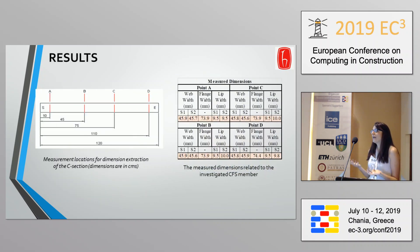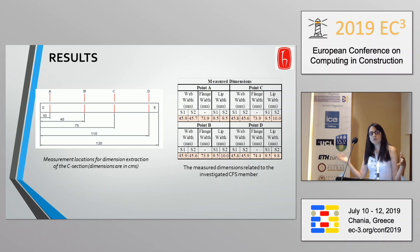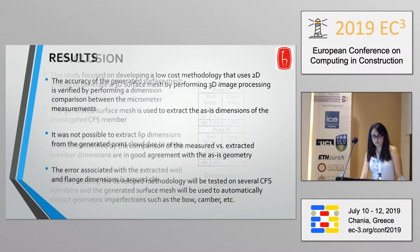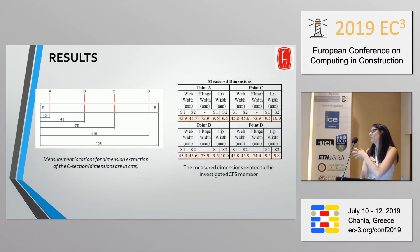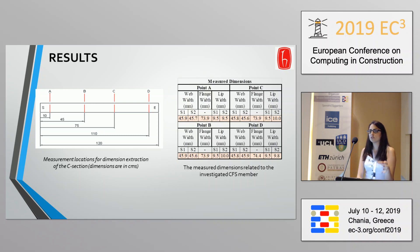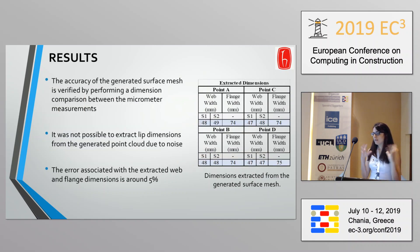To validate our results, we took hand measurements at multiple points along the length of the cold form steel member and compared them with extracted measurements from the point cloud. For example, at point A, S1 and S2 show 48 and 49 from the model versus measured values of around 46. This slight overestimation was expected due to point cloud noise. Overall, the analysis showed we are within a 5% error range across all dimensions, except for the lips which we were not able to capture.